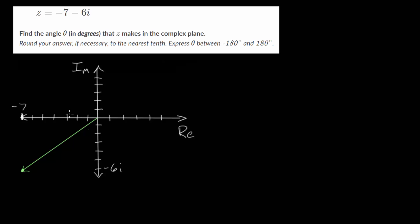This vector has a length and it has an angle. This angle is measured relative to the positive real axis, and we can call this angle theta.